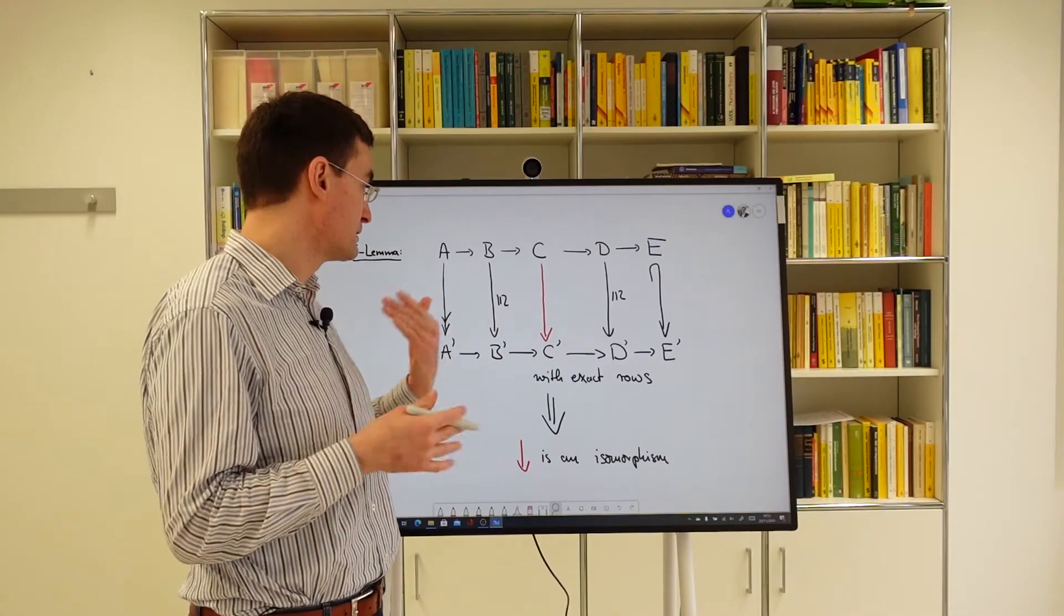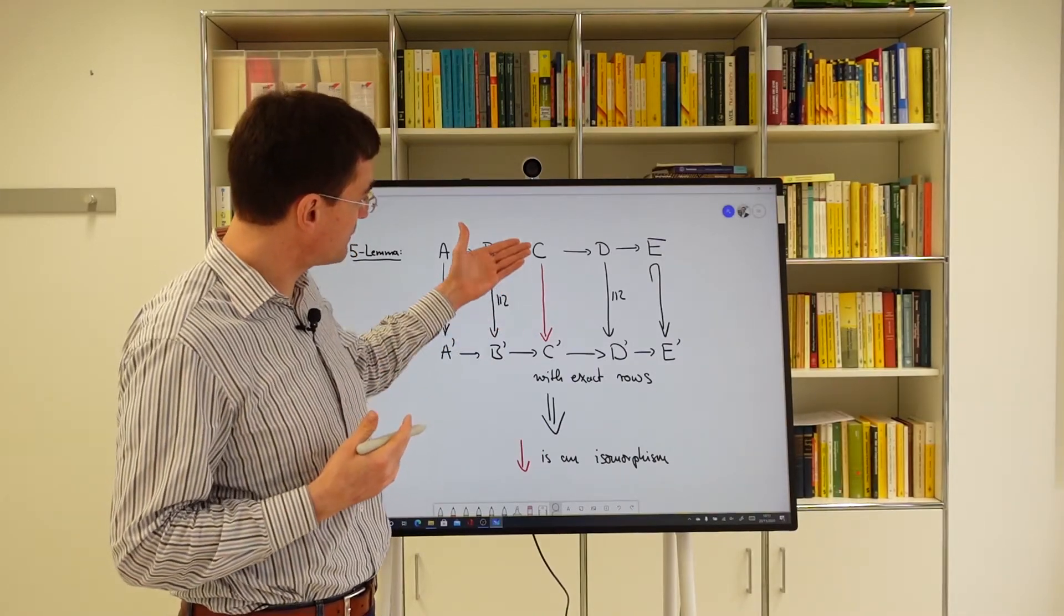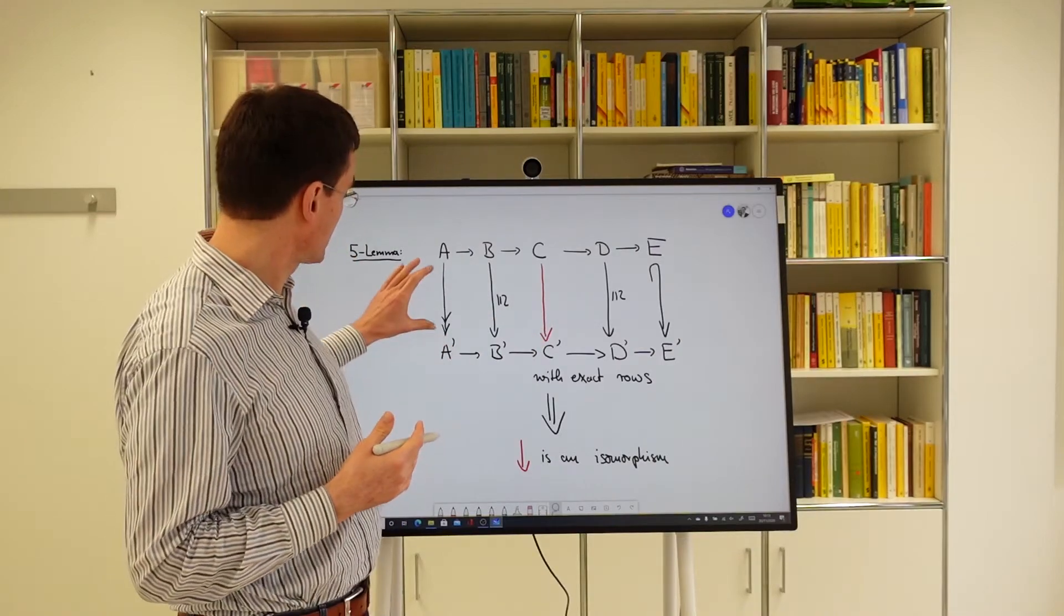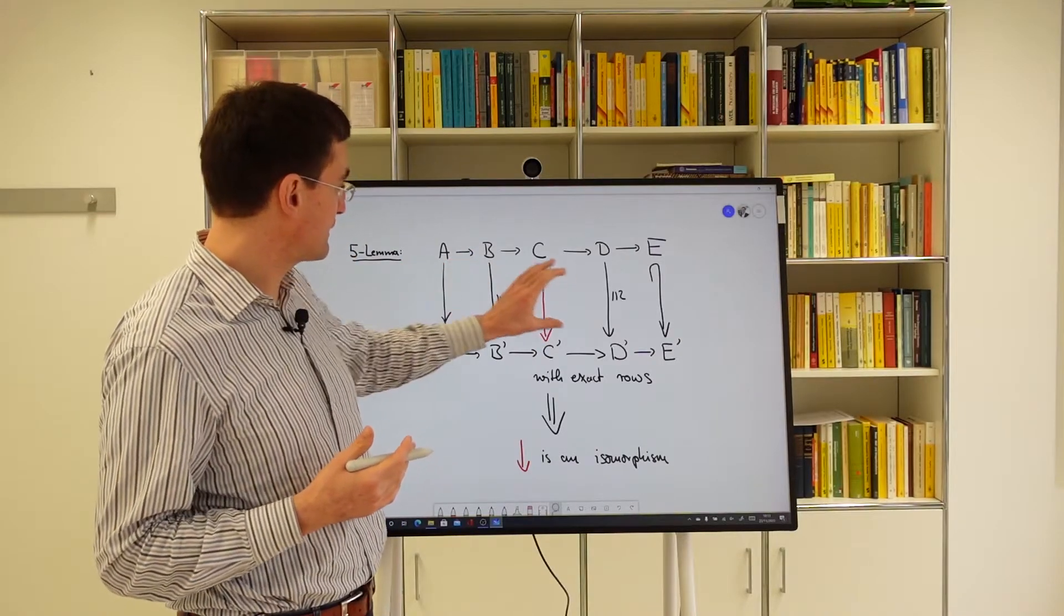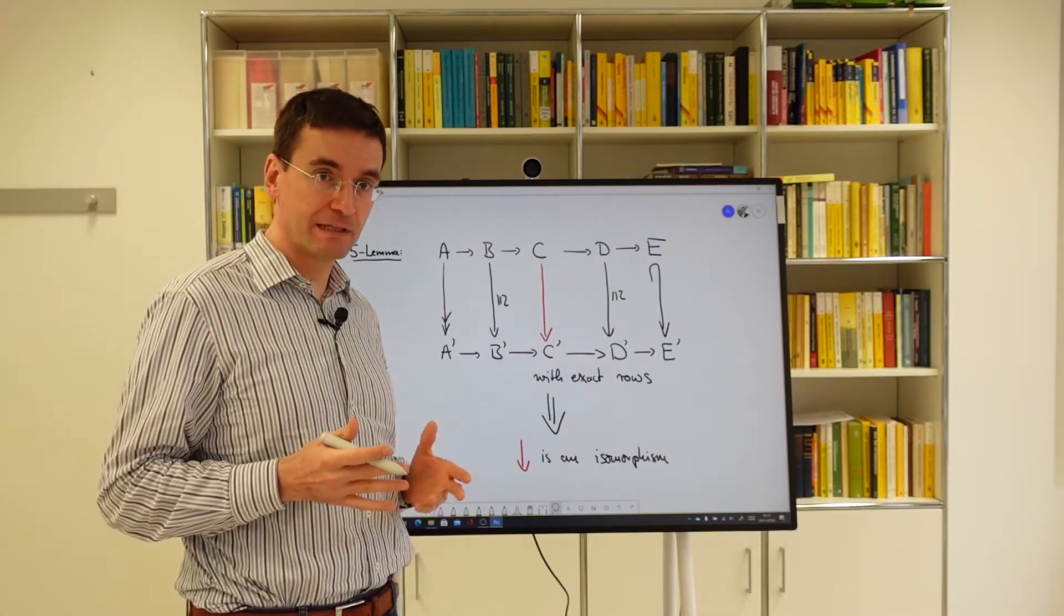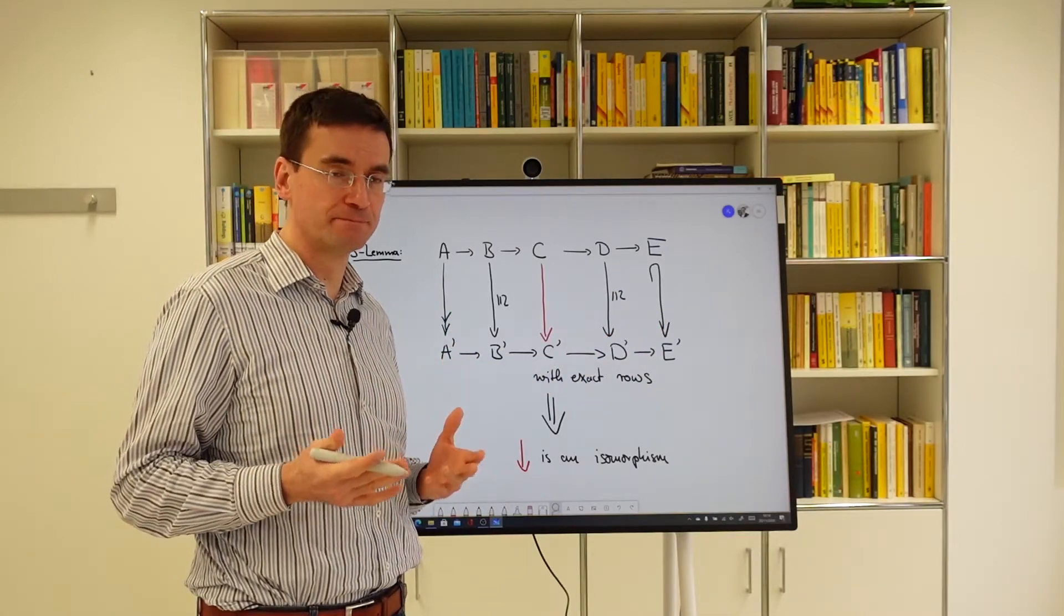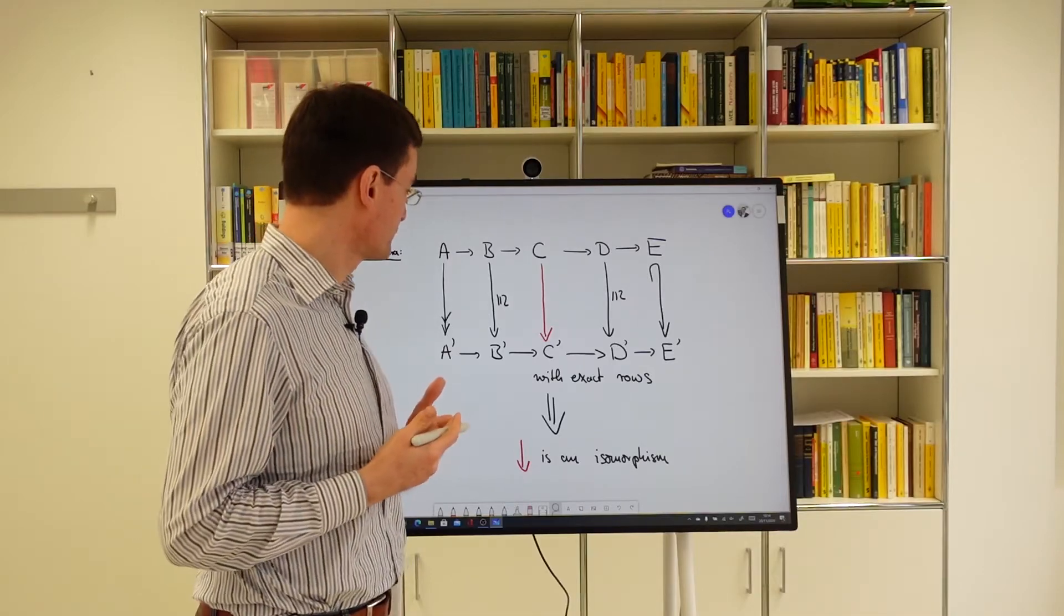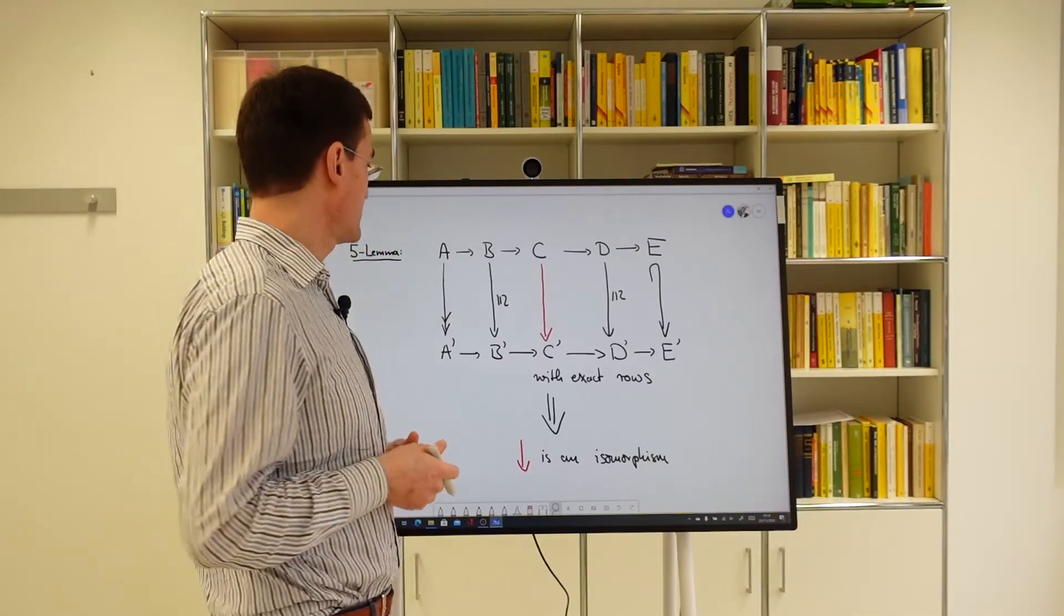And then dually, you prove the injectivity of the red arrow, and that involves the epimorphism and the isomorphisms, but not the monomorphisms. So, since it's really a dual proof, we only prove the surjectivity part.